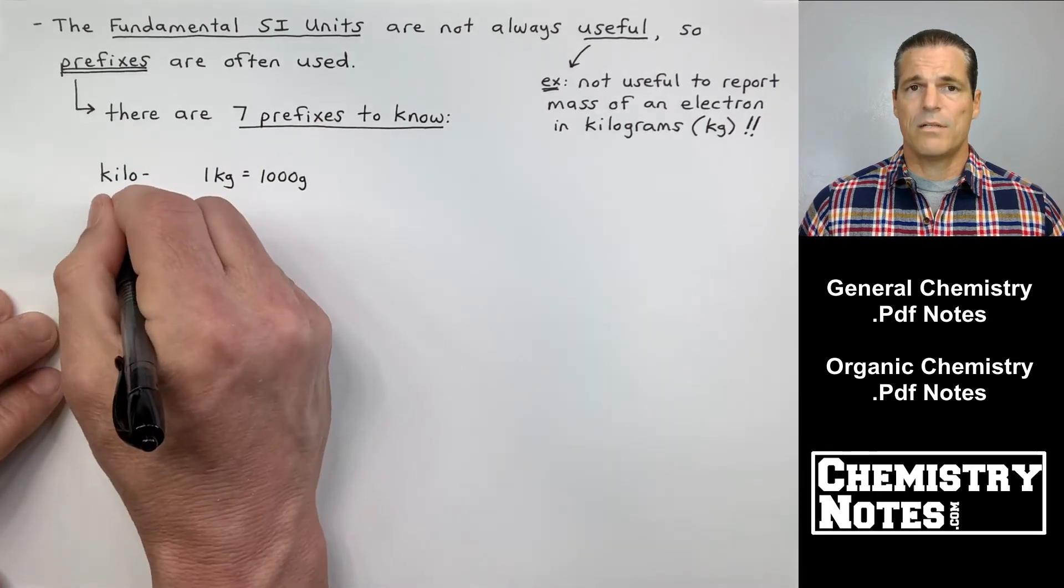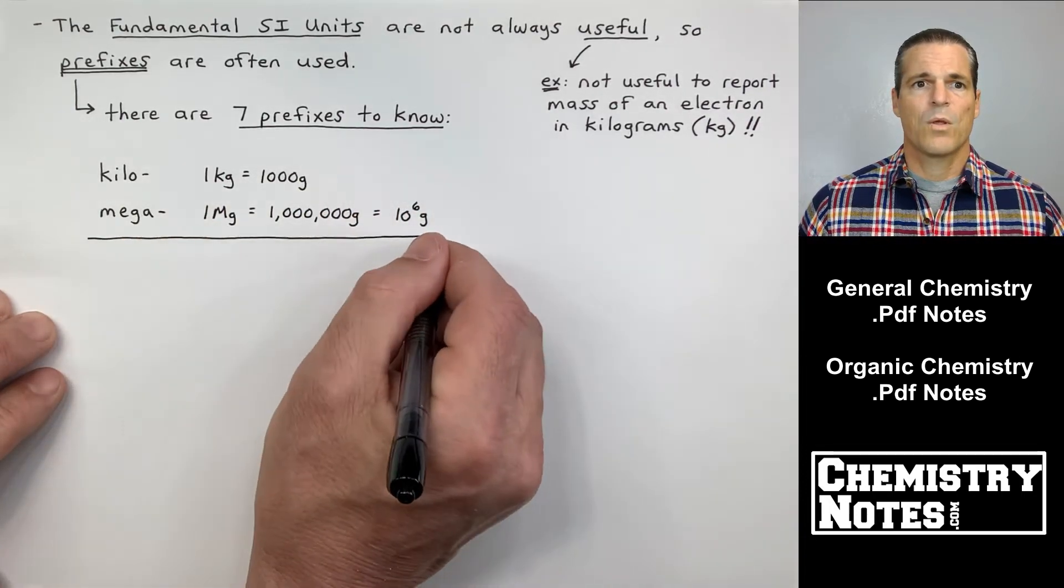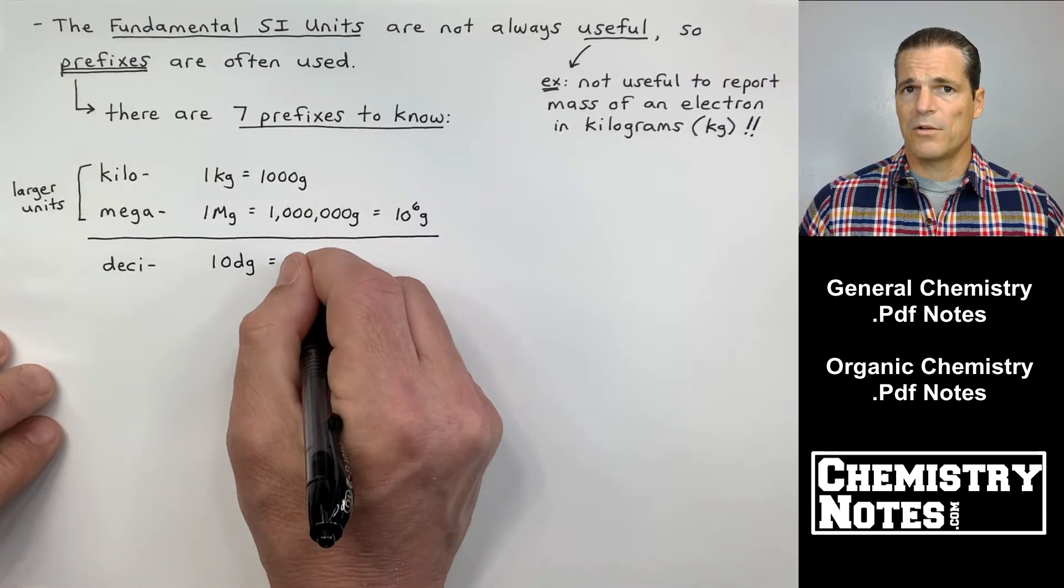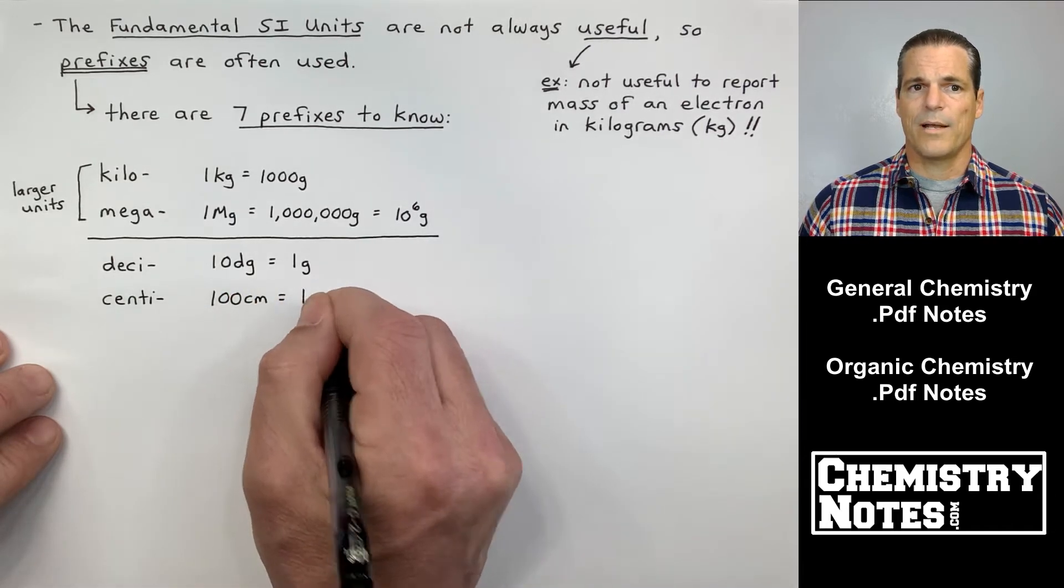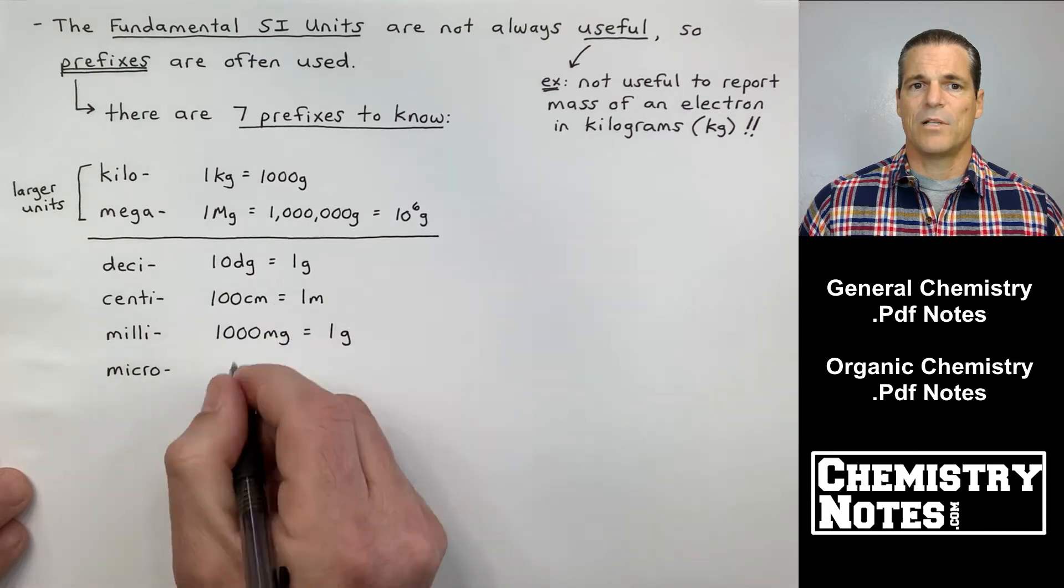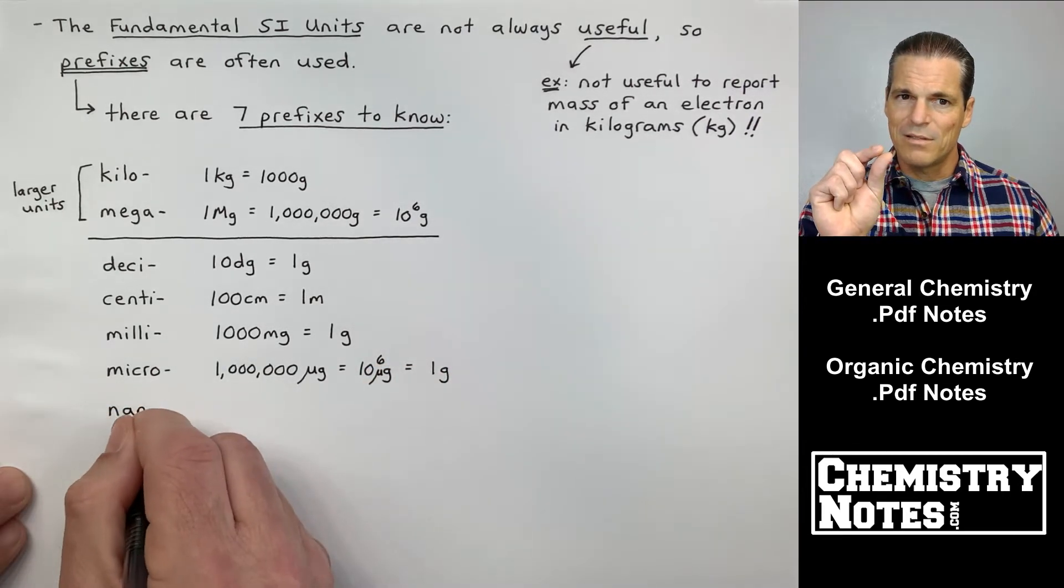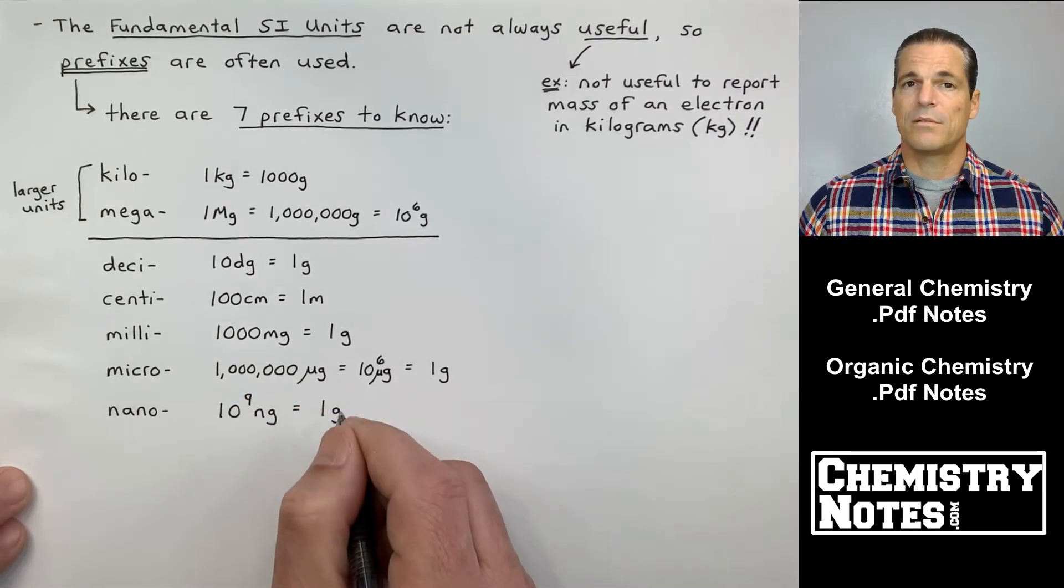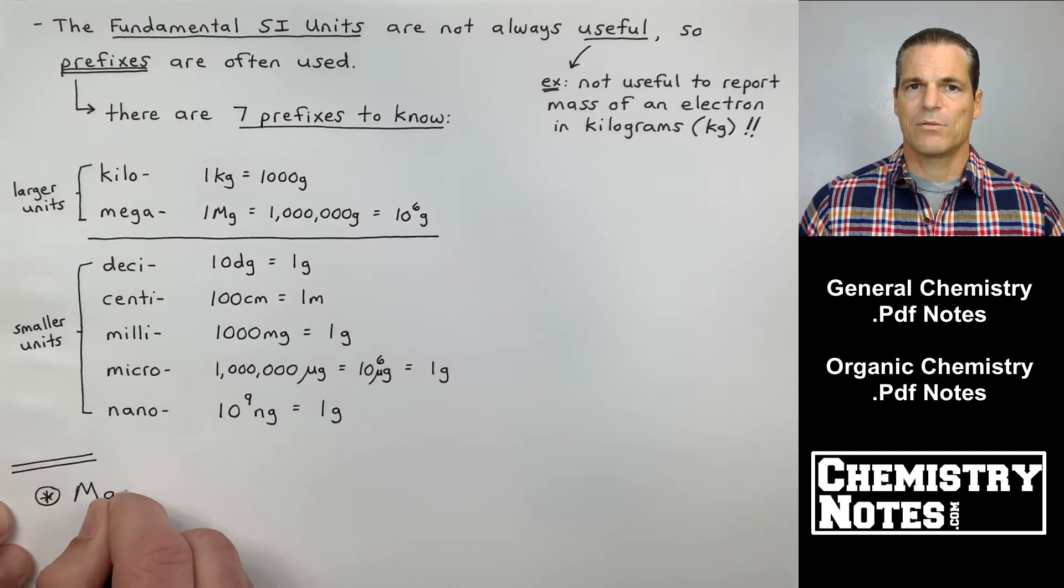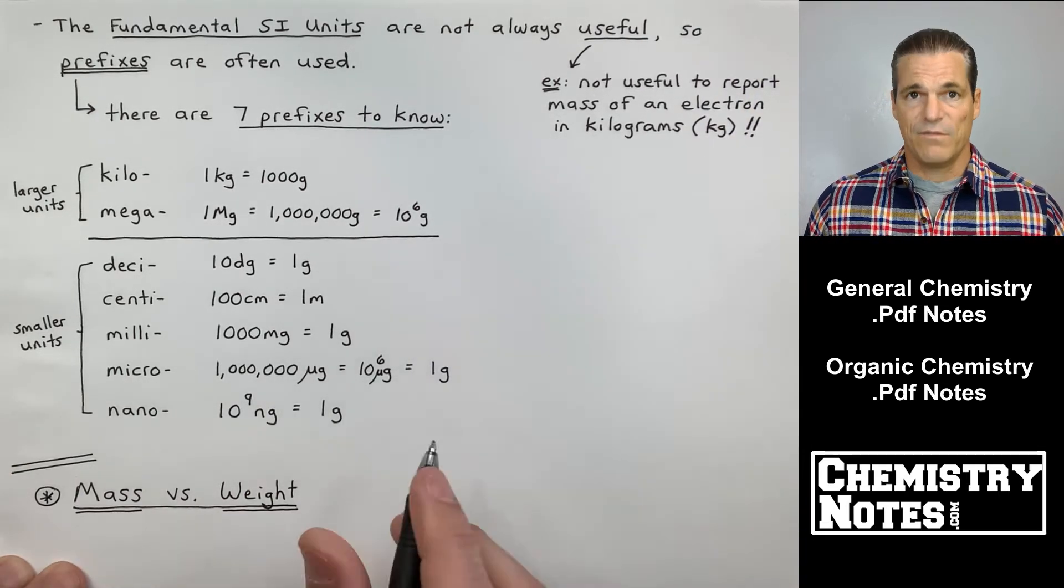I think I misspoke earlier, the SI base unit for mass is not grams, it's kilograms. So there are seven prefixes to know. Here are the larger ones, kilo and mega. One kilogram is equal to a thousand grams. One megagram, that's a big M there, capital M. One megagram is a million grams or 10 to the six grams. Now, some of the smaller units are desi. 10 desigrams is one gram. Centi, as an example, 100 centimeters is a meter. Milli is a thousand, 1000 milligrams is equal to one gram. Micro, getting smaller and smaller, it takes 1 million of those little micrograms to make one gram. 10 to the six micrograms equals one gram. Even smaller, nano. 10 to the ninth nanograms is equal to one gram. Now, we will use these when we start to use dimensional analysis and when we start to do unit conversions and that's coming up very soon.